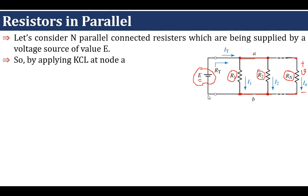Now apply KCL at this node to find out the equivalent resistance. When we apply KCL, whatever incoming current arrives at this node we write as positive. So IT is coming into the node and is therefore positive. I1 is going away from the node so it is negative. I2 is also going away from the node so it is also negative.